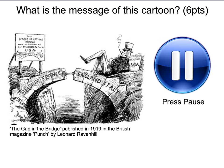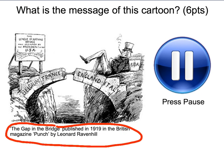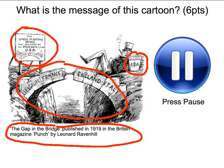It will be time for you to press pause to look at the symbols contained within this historical cartoon and figure out what the overall message is. Note the writing at the bottom: the cartoon is entitled 'The Gap in the Bridge,' published in 1919 in the British magazine Punch by Leonard Ravenhill. This idea of the gap in the bridge is important when thinking about the overall message. When looking at historical cartoons, look at everything — including the keystone, objects, writing, and imagery — as it's all designed to send messages to the audience.